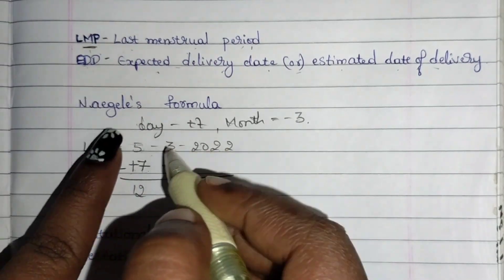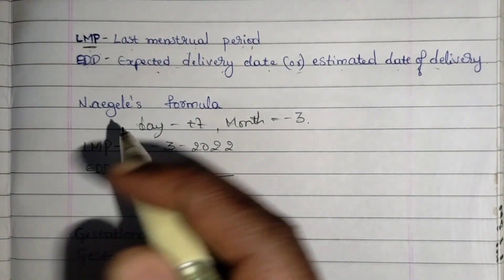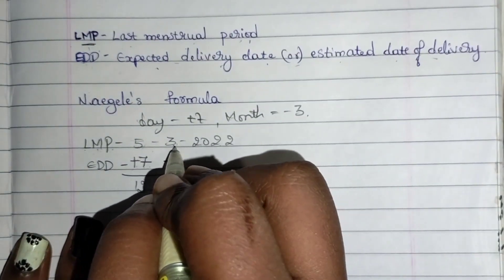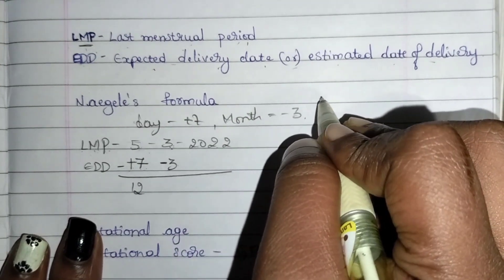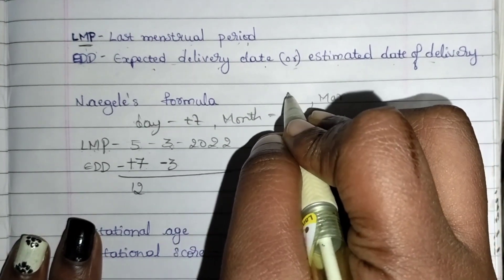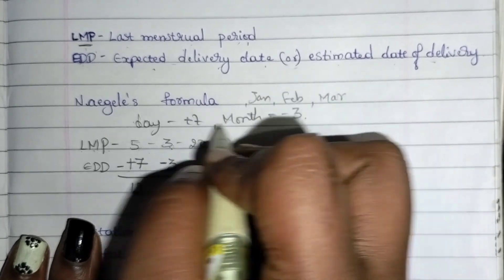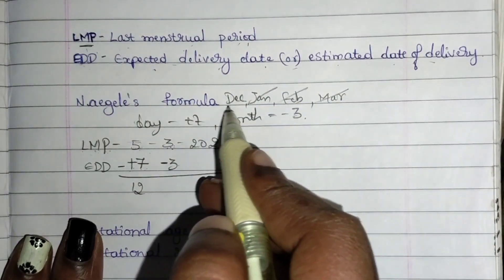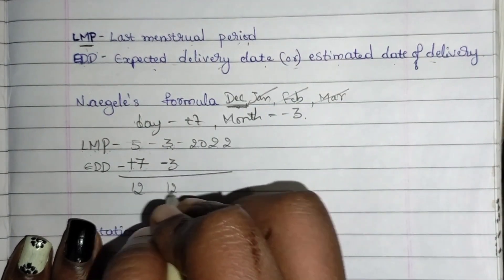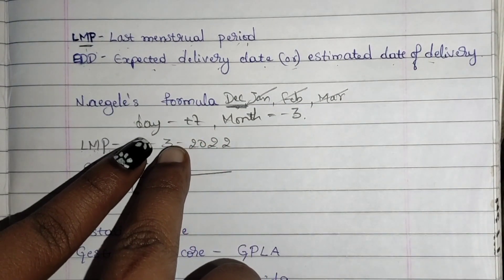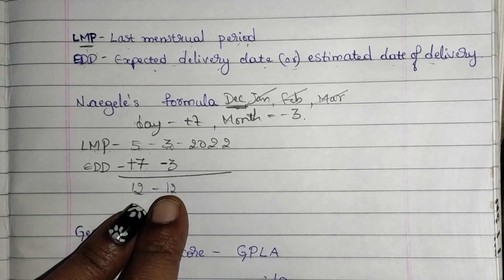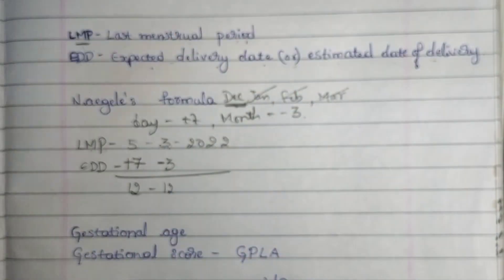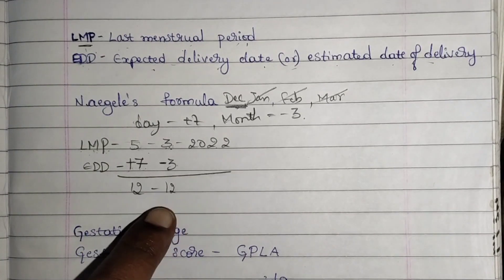For the month, we subtract 3 from 3, which gives 0 — but you can't write 0. The third month is March. Going backwards: March, February, January — and before January we have December. So if you subtract 3 from 3, you write 12 here, which represents December, not 0.